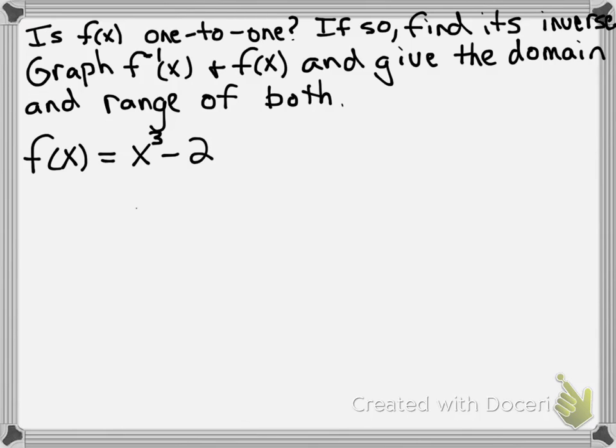Okay, so the first thing we do is look at the function and see if it's one-to-one. Basically, that means does it pass the vertical line test and the horizontal line test. This is a cubic function that's been shifted down by 2.